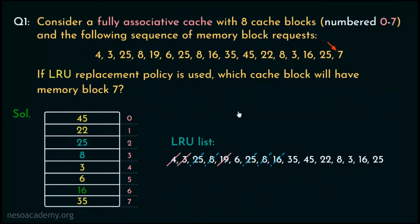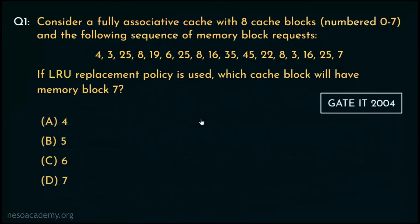For block request number 7, we opt for replacement since the cache is full. From our LRU list, block number 6 is the least recently used, so block 6 is selected for eviction, making space for block 7. Block 7 is added at the end of the LRU list as the most recently used. Observing the cache closely, cache line number 5 is now holding memory block number 7. Therefore, for question 1, option B is the correct choice.